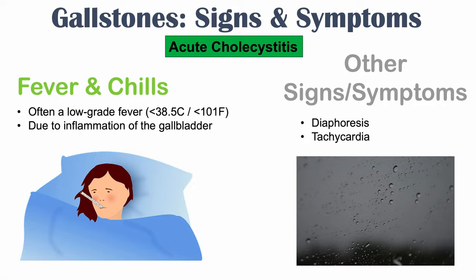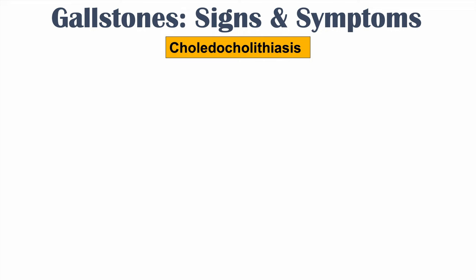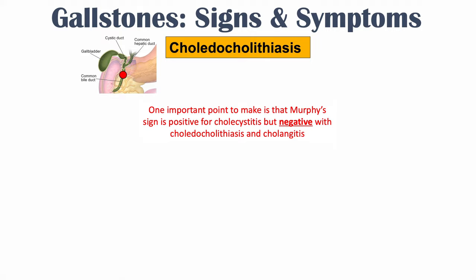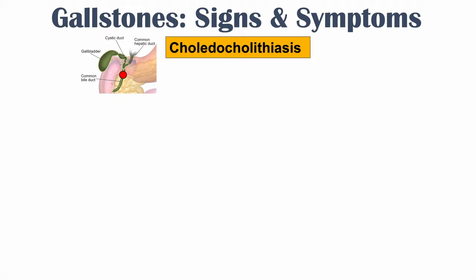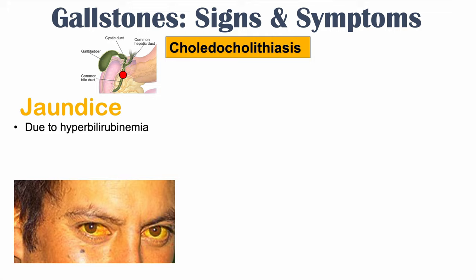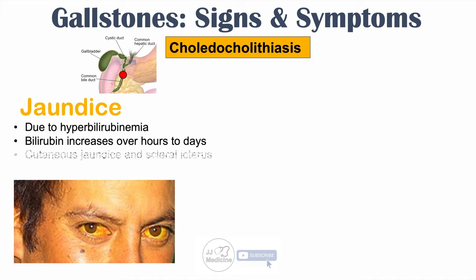As the stone travels through the biliary tract, it can lead to choledocholithiasis — when the stone reaches the common bile duct and gets stuck there. The signs and symptoms of choledocholithiasis include the same pain, nausea, and vomiting as acute cholecystitis, but with additional features. These include jaundice — yellowing of the skin and eyes — due to hyperbilirubinemia, meaning high levels of bilirubin in the blood. This bilirubin increases over hours to days. An individual may have a normal skin tone and white sclera but can rapidly become yellow in coloration. Jaundice affects the skin (cutaneous jaundice) and the sclera of the eyes, which is called scleral icterus.